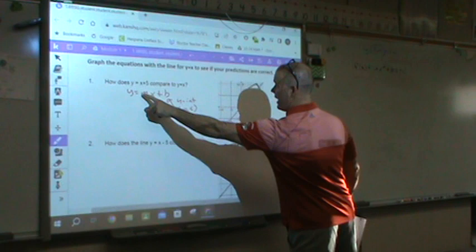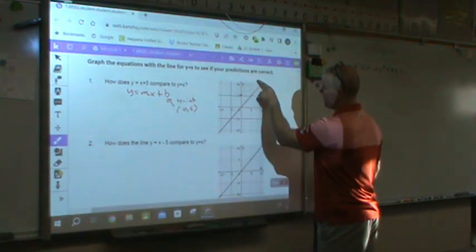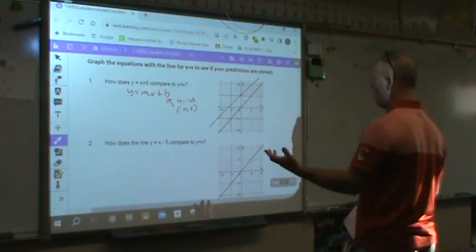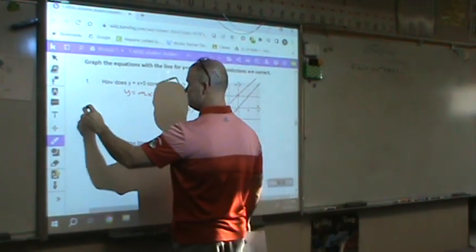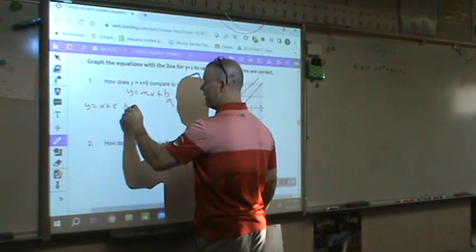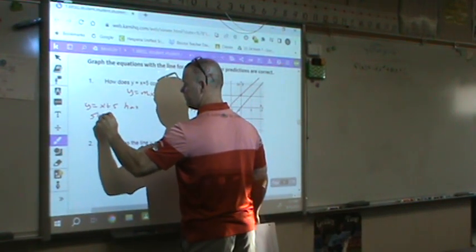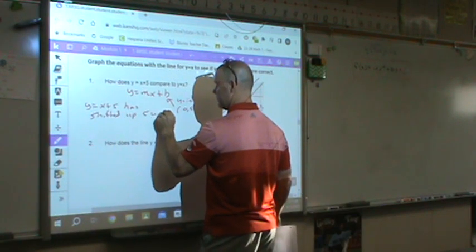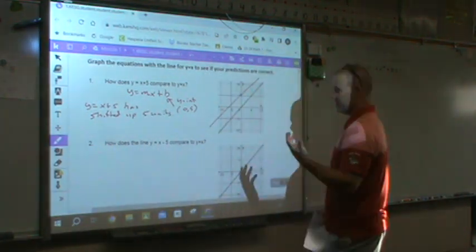And since it has the same slope, it's going to be parallel. Now, what has happened to the line? The only thing that's happened to the line is y equals x plus 5 has shifted up 5 units compared to y equals x. That's what happened.